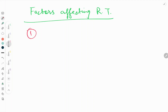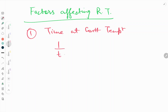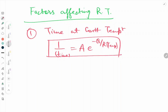So basically there are six factors. The first one is time at constant temperature. For this one there is an equation: 1/t (where t is time) is equal to A·e^(−Q/RT), where T is the temperature. This is called the Arrhenius equation.